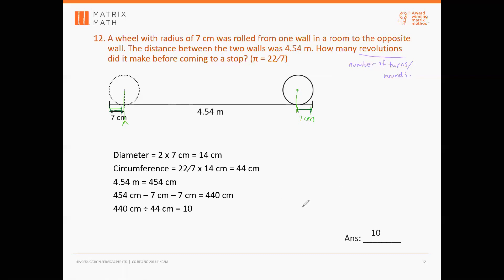Okay, otherwise it will just be a fluke answer. If you just take 454 divide by 44 and round down, it's a fluke answer. Okay, so the logic has to be there. You've got to understand the ball will not touch, will not cover the whole distance, the two 7 cm at both ends. Everyone okay?